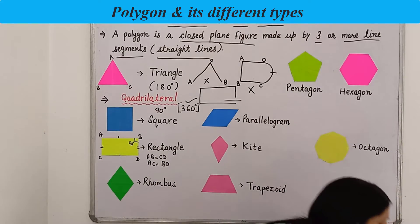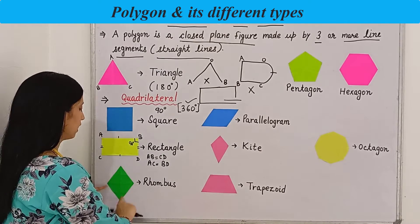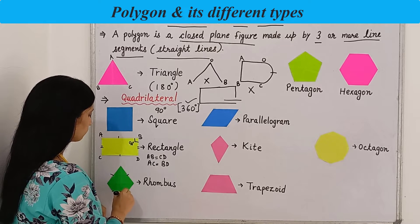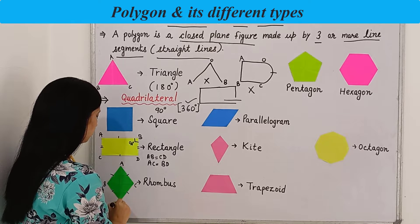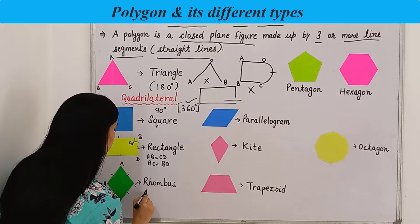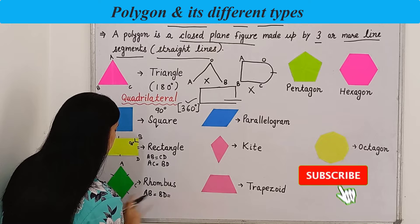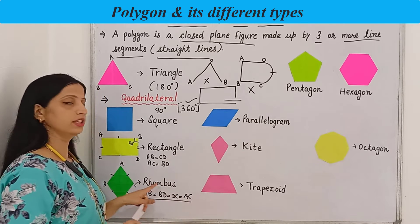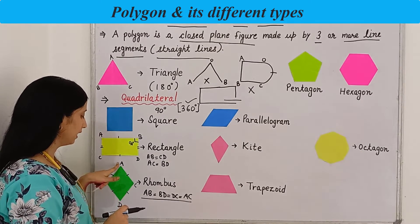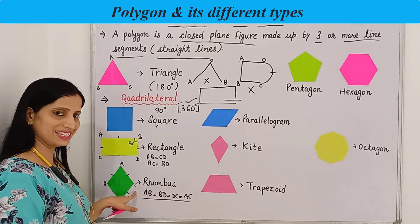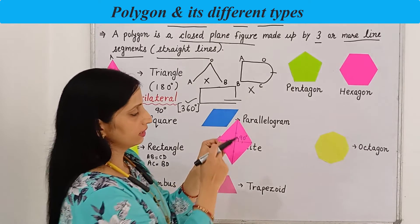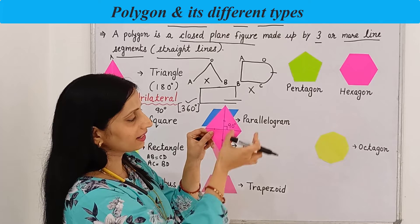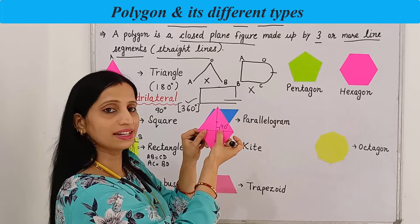Now let's move on to a rhombus. A rhombus has four sides and all the sides are equal. If we name it ABCD, then AB equals BC equals DC equals AC — all four sides are equal. Opposite angles will be equal: angle A equals angle D, and angle B equals angle C. It has two diagonals and the diagonals will bisect each other at 90 degrees.